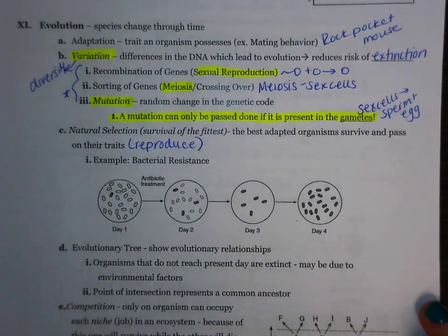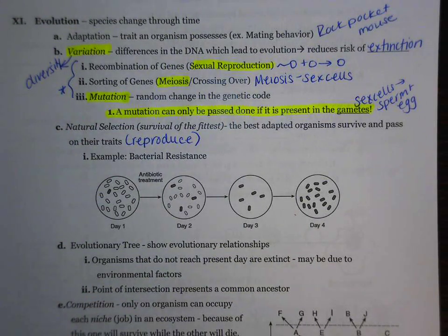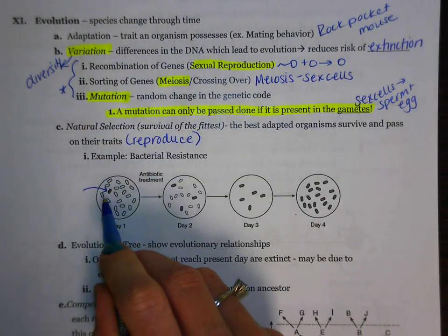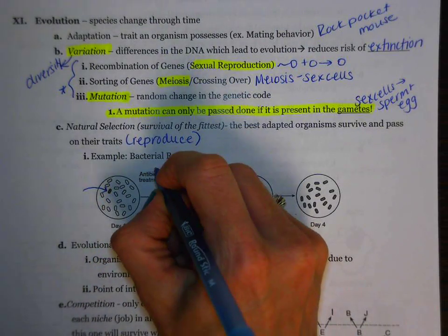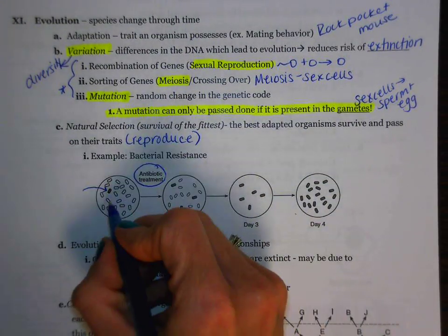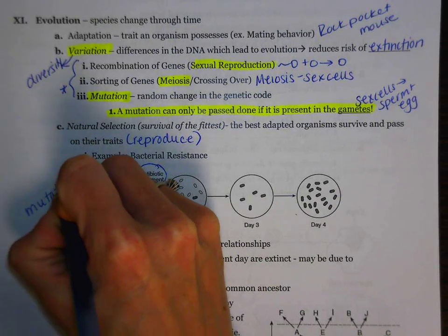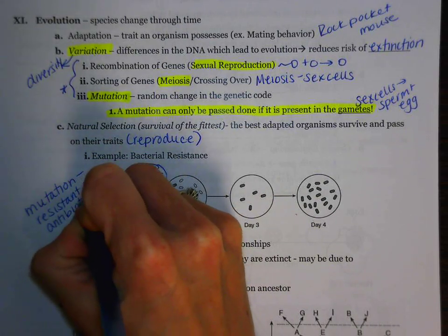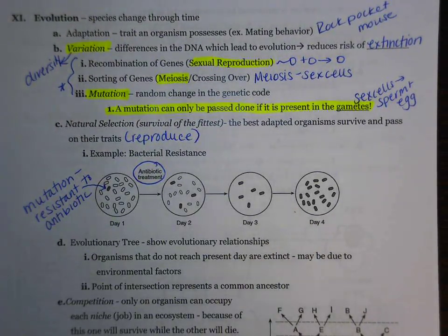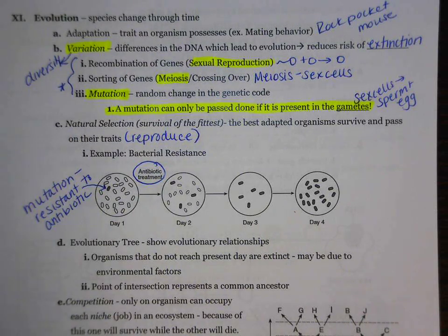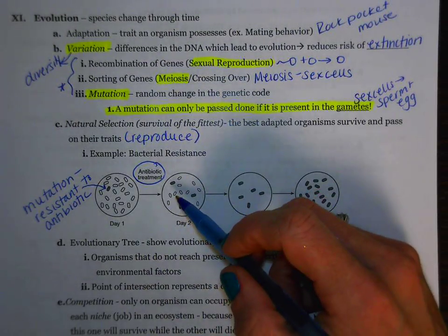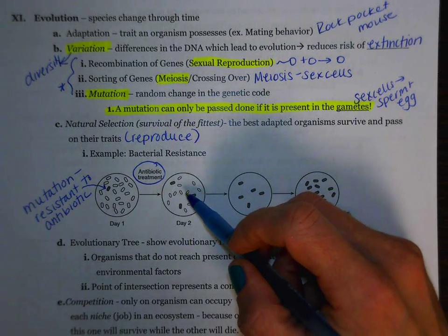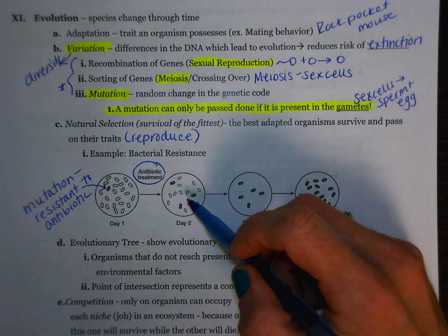One example that we looked at in class was bacterial resistance. If we look at day one, you'll notice that there are two different variations of this bacteria. The gray one is going to have a mutation. Remember, that mutation existed before the antibiotic treatment. This gray one most likely has a mutation which made it resistant to the antibiotic. Resistant means that when this chemical is applied to the bacteria, that bacteria is not going to die. Since that bacteria does not die, if we look at day two, you'll notice that that bacteria was actually able to reproduce. Where the white bacteria have decreased in number, the gray bacteria have actually increased.